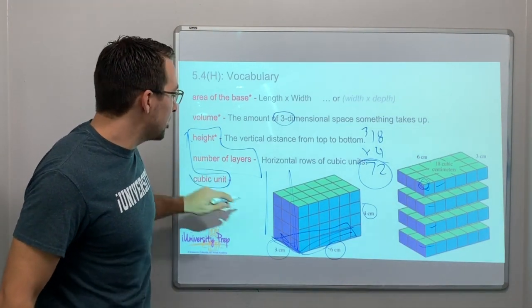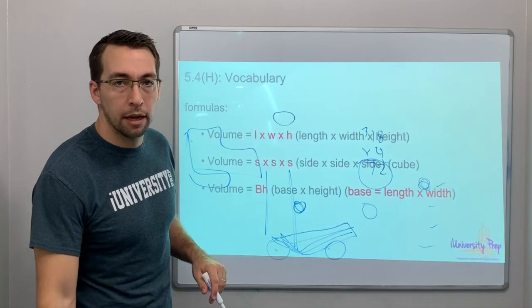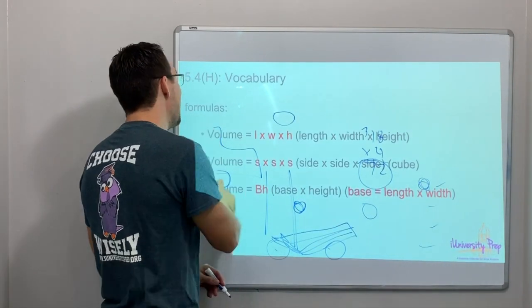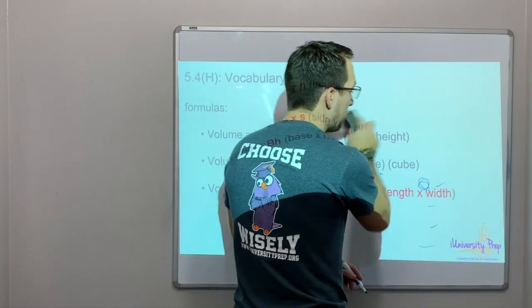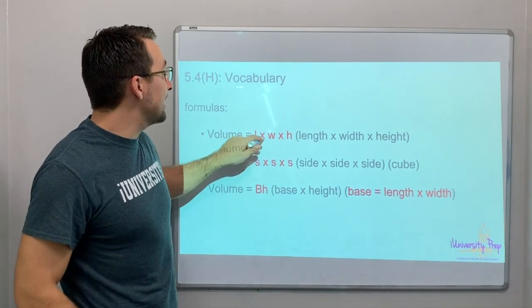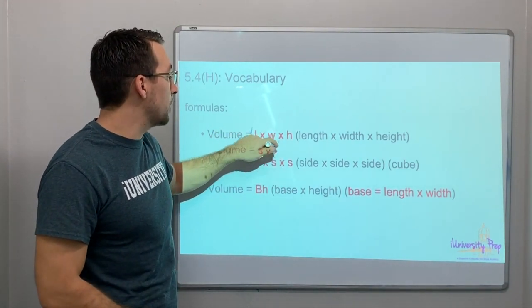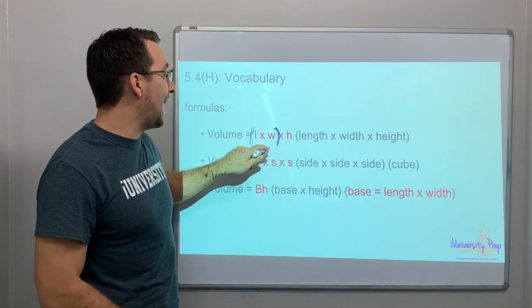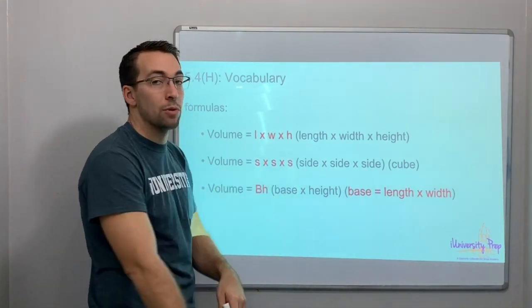I have this picture broken into layers. The cubic unit is just one of these cubes - that's one cubic unit. Formulas to find some of these terms: volume of a rectangular prism is length times width times height. Area is length times width. For volume we add the height - length times width times height or length times width times depth.